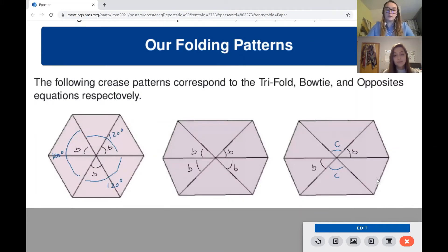Working on specific results for symmetric and water bomb degree six vertices, we decided the next step would be to find equations that relate folding angles for general crease patterns like the degree four case. Here we have three different crease patterns that correspond to a generalized trifold, two modes of a generalized bow tie, and also a generalized opposites respectively.